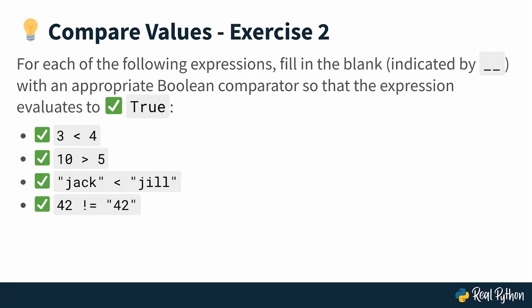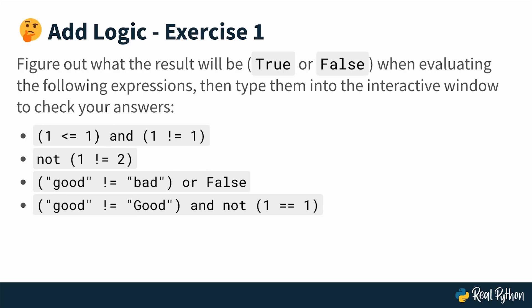In this exercise, we're adding some logic. You should figure out what the result will be — either true or false — when evaluating the following expressions. Think about it and then type them into the interactive window to check your answers. You have four expressions. Keep in mind that there are parentheses and they can influence the order of execution — the precedence that these different sub-expressions get evaluated.